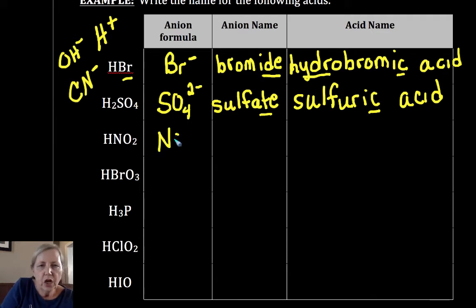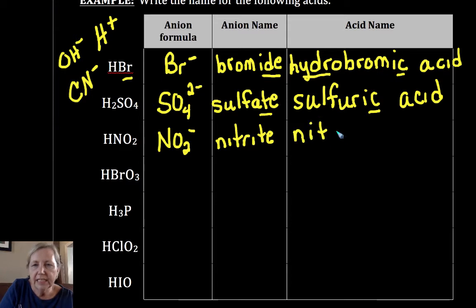NO2-. That's the nitrite ion. 'All night I was nauseous.' So -ite goes to -ous. Sorry about that, I forgot my R. Nitrous acid.